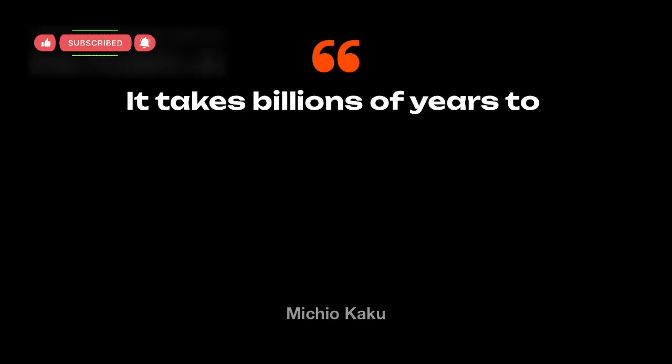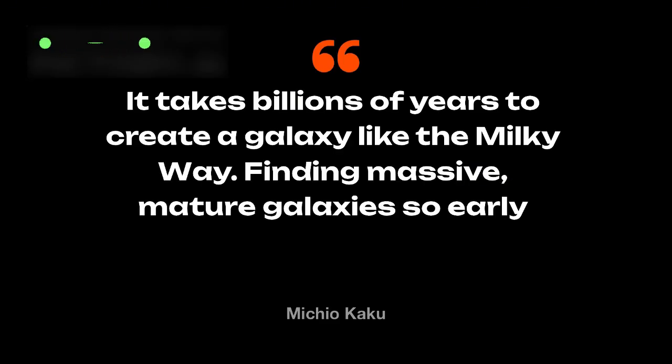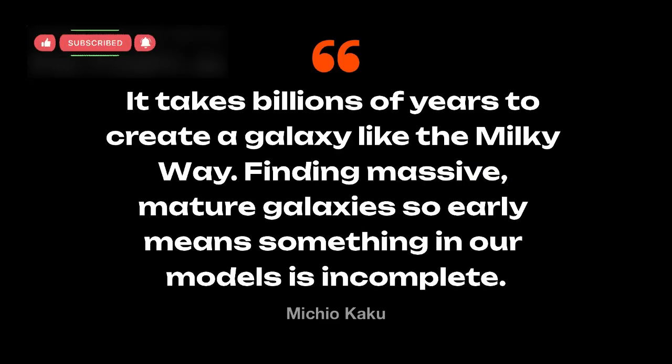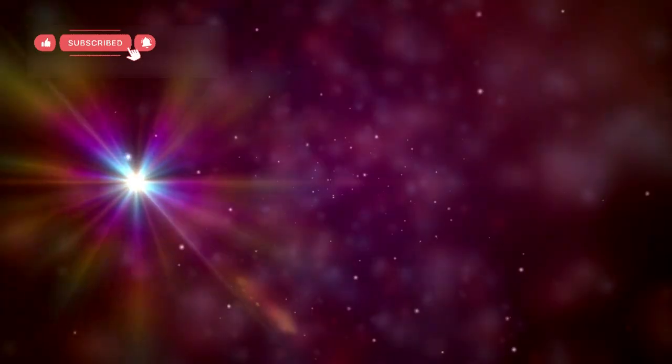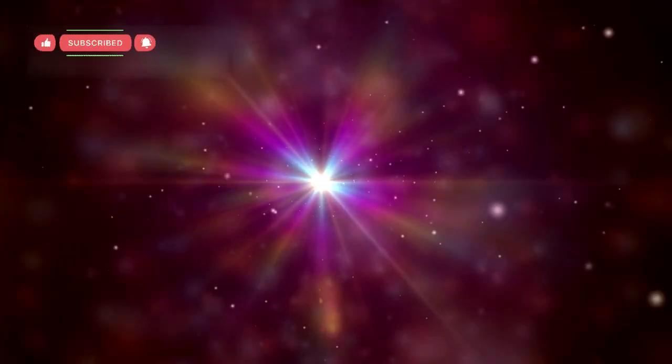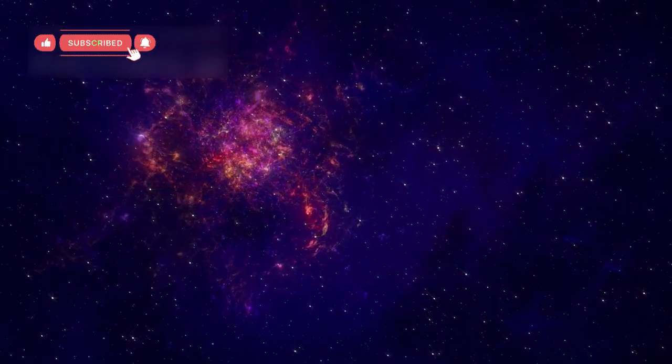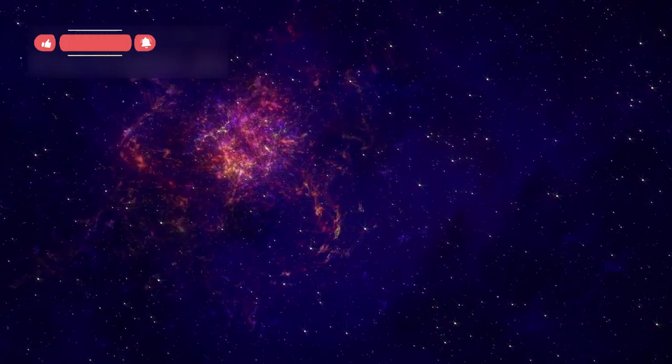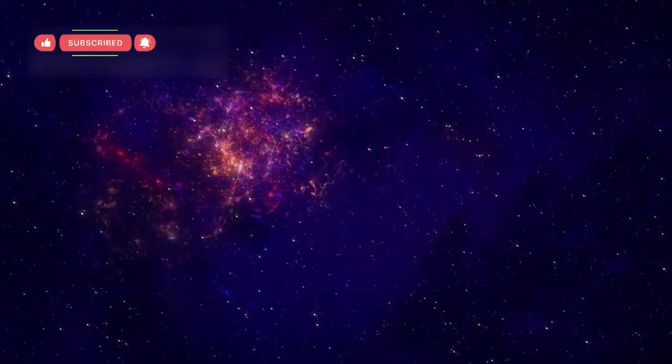Theoretical physicist Michio Kaku expressed his amazement, stating, 'It takes billions of years to create a galaxy like the Milky Way. Finding massive, mature galaxies so early means something in our models is incomplete.' His words reflect a growing sense among cosmologists that the universe's timeline may need to be rewritten.